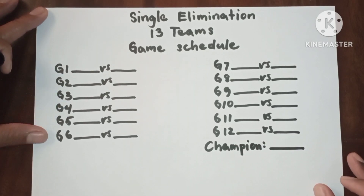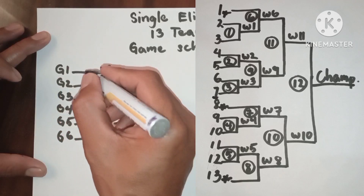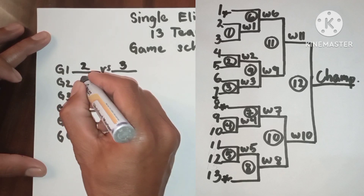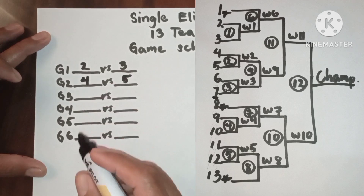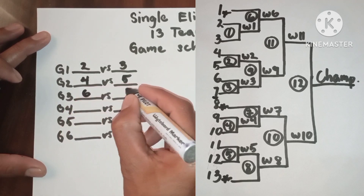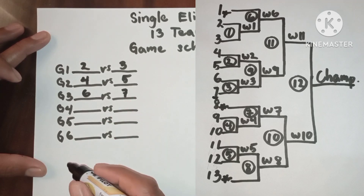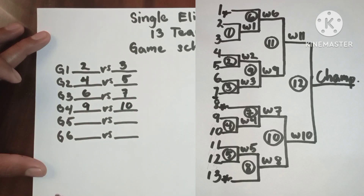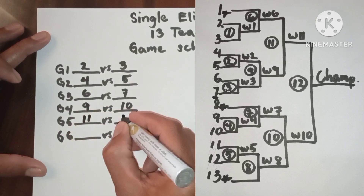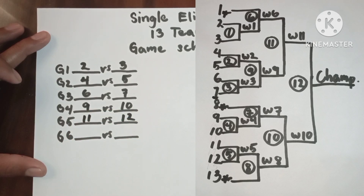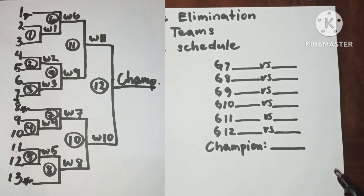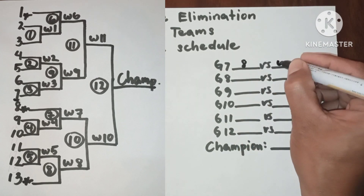Now let us interpret the diagram. In Game 1 we have 2 vs 3. In Game 2 we have 4 vs 5. In Game 3 we have 6 vs 7. In Game 4 we have 9 vs 10. In Game 5 we have 11 vs 12. In Game 6 we have 8 vs Winner 1.